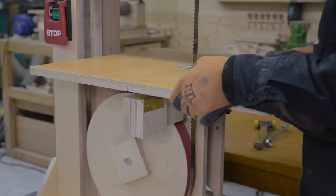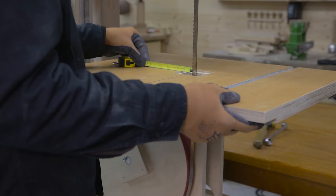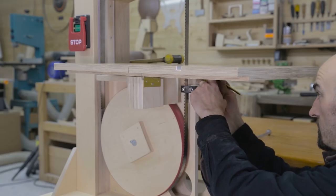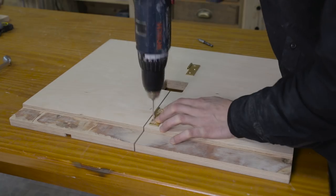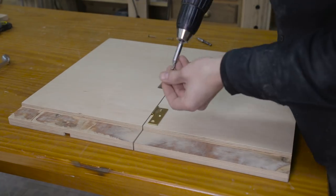I set the table down on the saw, check if the size is right and mark the position of the hinges. I screw them in their place and check whether the table can be tilted correctly.